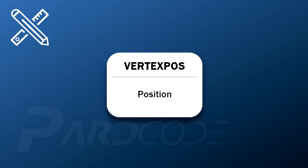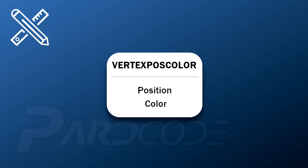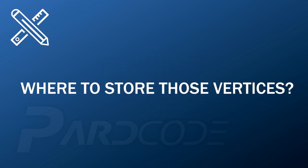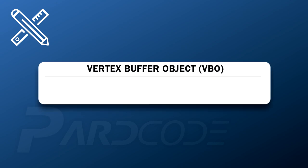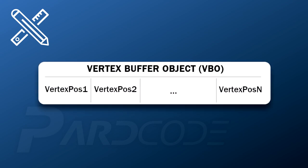We can have multiple types of vertex. For example, a vertex with only the position attribute, which we can call vertex pos, or a vertex with position and color attributes, which we can call vertex pos color, and so on. We need to store those vertices in a specific OpenGL object called the vertex buffer object. A VBO represents a memory buffer on the graphics card containing a list of N vertices of a specific type.